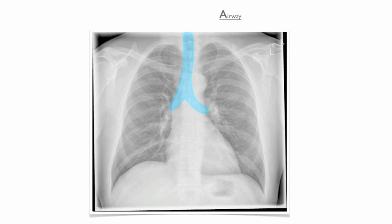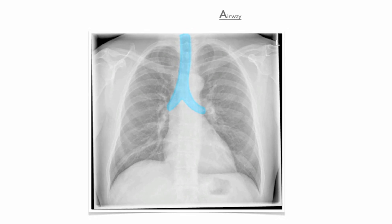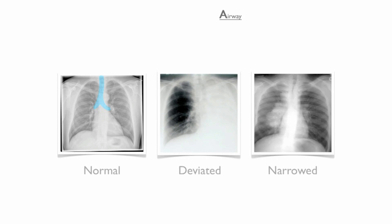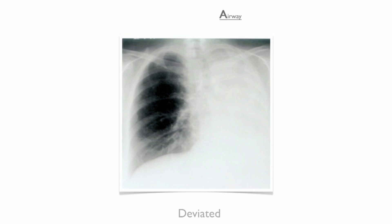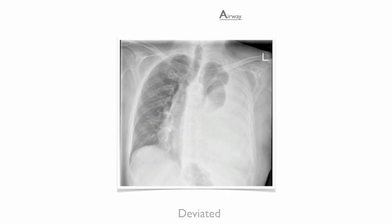Airway: the trachea sits in the midline and bifurcates at the carina into the left and right main bronchus. You should be aware of three main presentations: the normal, deviated and narrowed airway. There are many causes of tracheal deviation, but they can be generally classified into those diseases that pull the trachea towards the affected side, and those diseases that push the trachea away from the affected side.